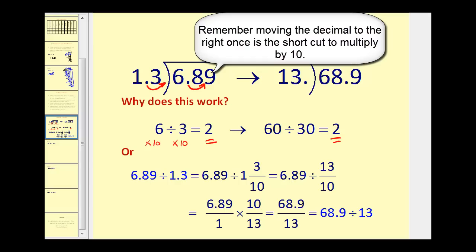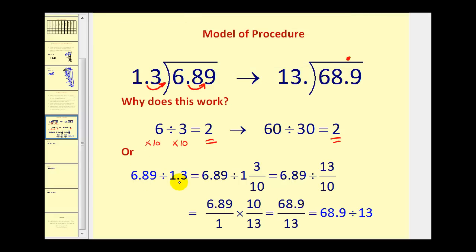Another way to look at this would be in terms of fractions. If we took the original division problem and rewrote 1.3 as 1 and 3 tenths in fraction form, and then rewrote this as 13 tenths, we would have 6.89 divided by 13 tenths. Remember when you're working with fractions, you normally multiply by the reciprocal instead of divide. So dividing by 13 tenths is the same as multiplying by 10 thirteenths. Now watch what happens when we multiply the numerators together. We have 68.9 and our denominator is 13. Well, lastly, remember that a fraction bar is a division symbol. So what we've shown here is that 68.9 divided by 13 is equivalent to 6.89 divided by 1.3.